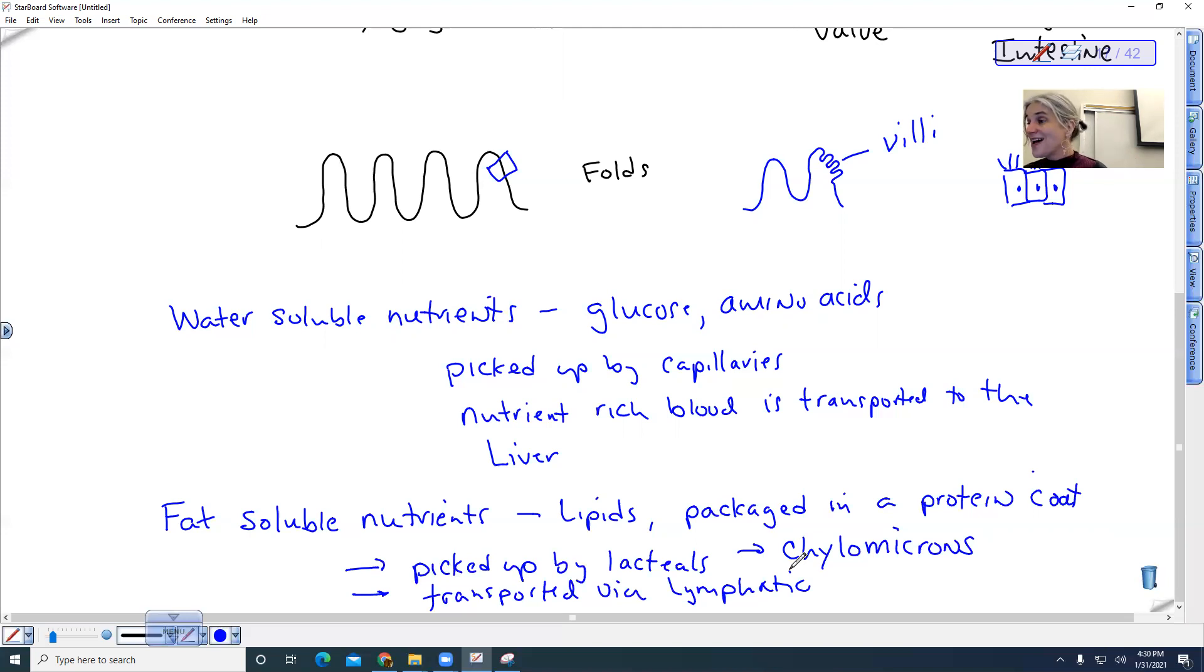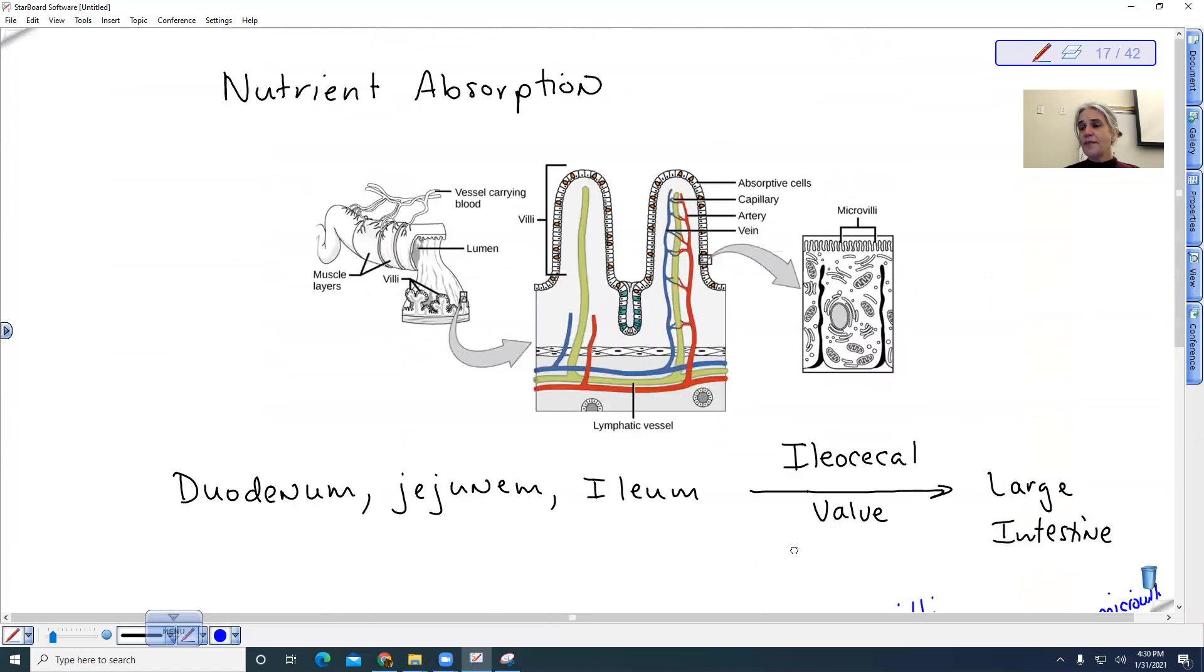So we'll talk about the lymphatic system more when we get to the circulatory system. So let's look at this diagram. These are the capillaries. This is the lacteal, the green, the lymphatic system is always green for some reason. It's not really, but this is what is picking up the fat-soluble nutrients. This is the capillaries that are picking up the water-soluble nutrients.